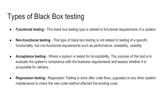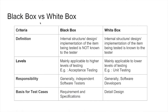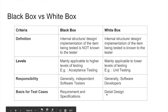Now let's see the difference between black box testing and white box testing. In black box testing, the internal structure is not known to the tester, while in white box testing, the internal structure is known to the tester. Black box testing is applicable to higher levels of testing such as acceptance testing, while white box testing is mainly applicable to lower levels of testing such as unit testing. Since black box testing is at higher levels, it is performed by independent software testers, while white box testing at the initial stage is performed by software developers. Black box testing is entirely based on software requirements and specifications, but white box testing is based on detailed design.